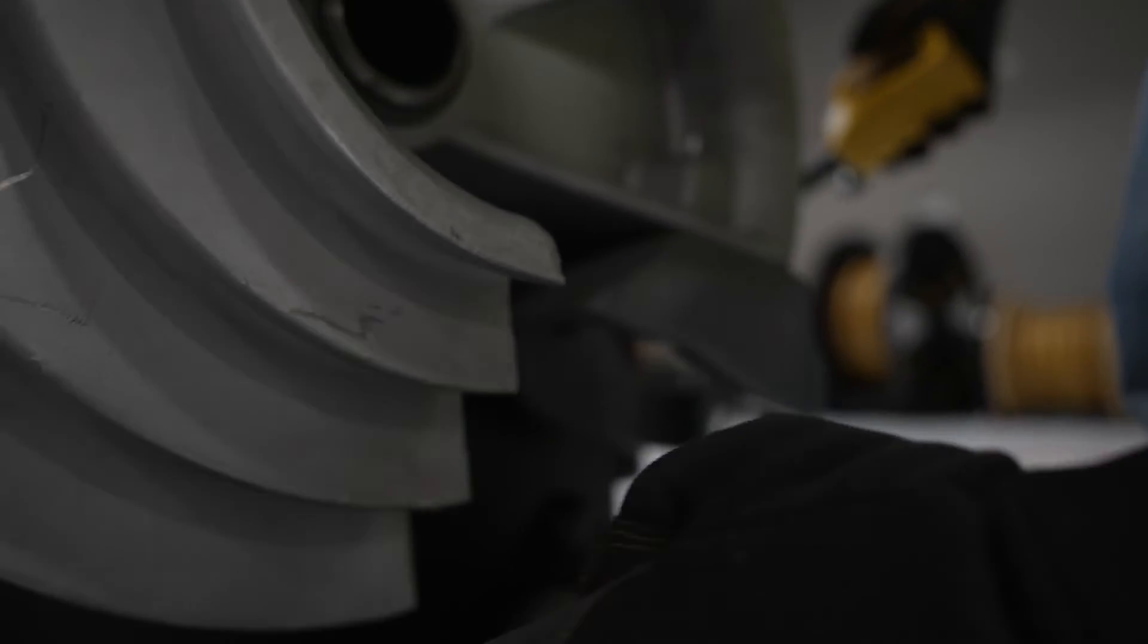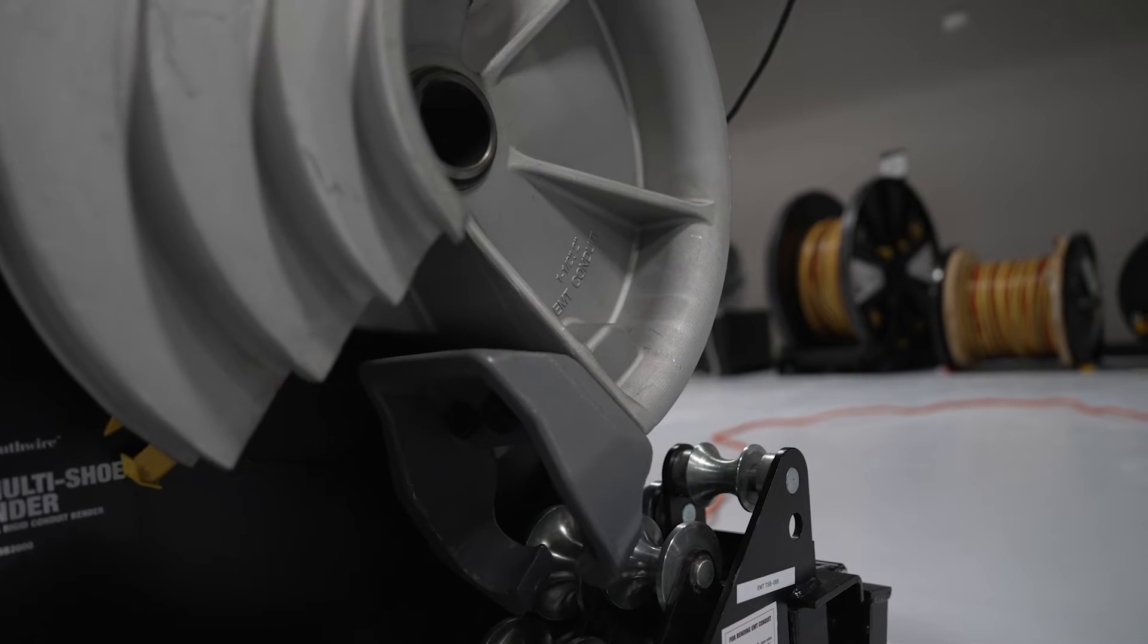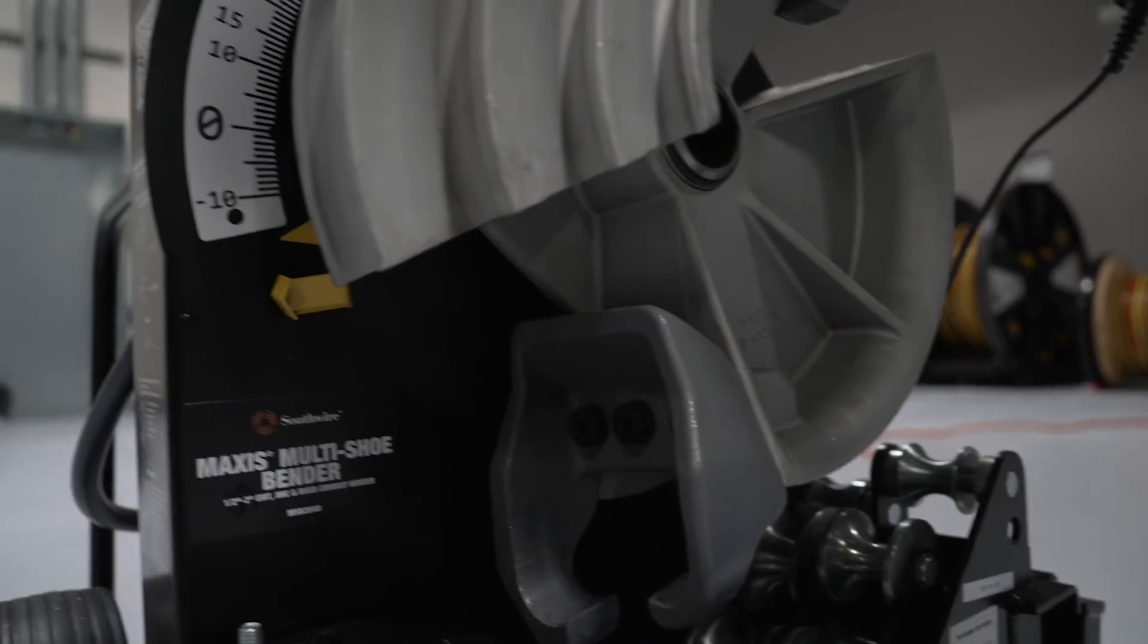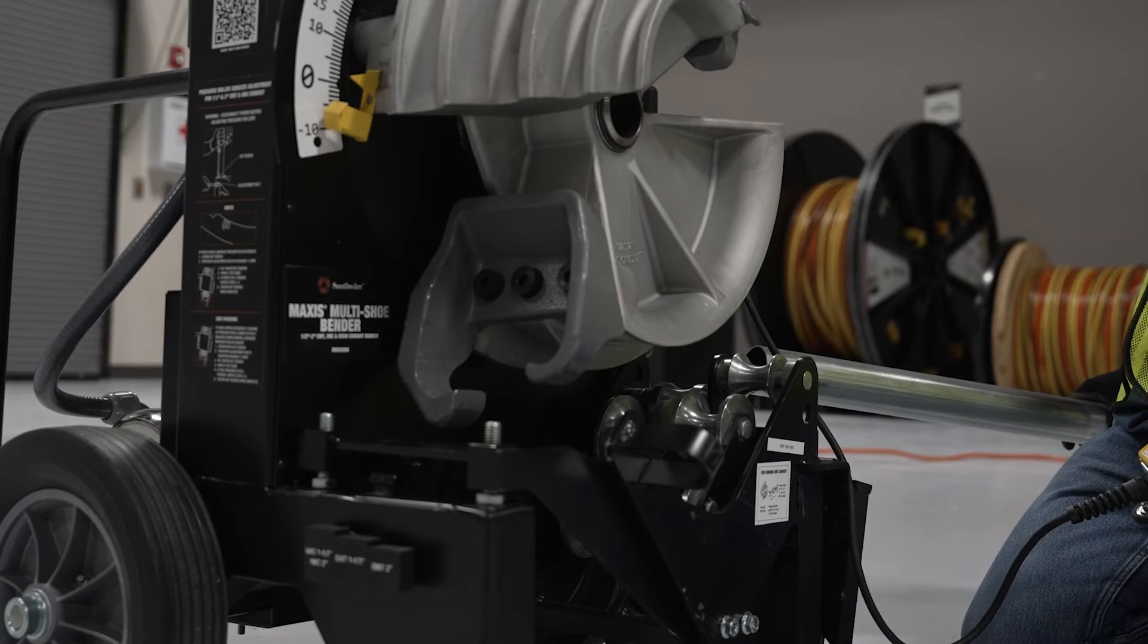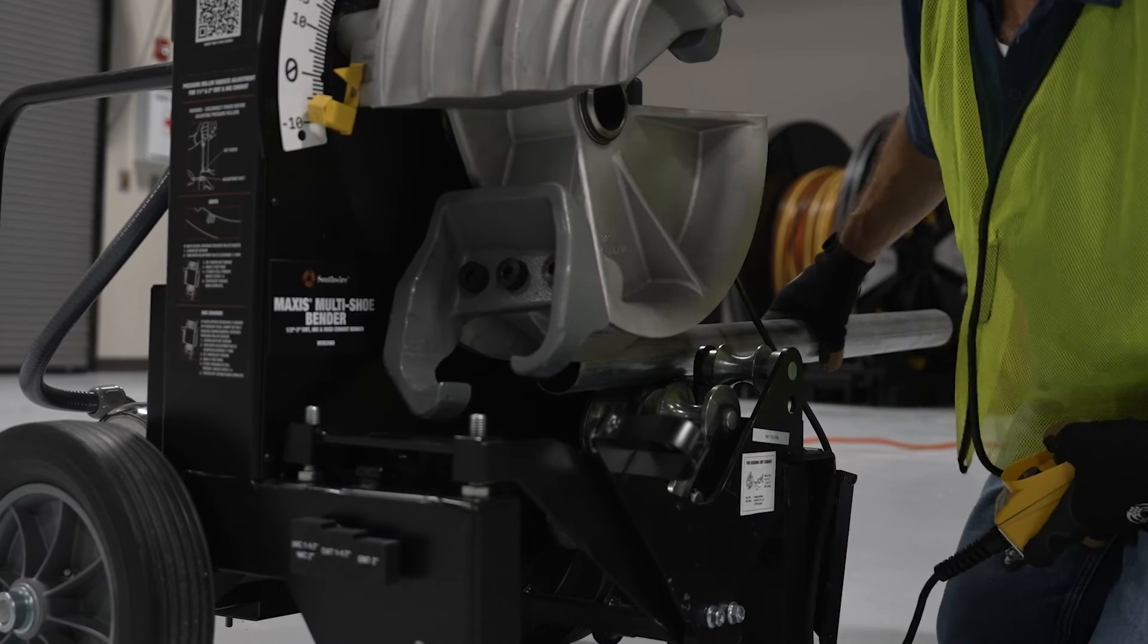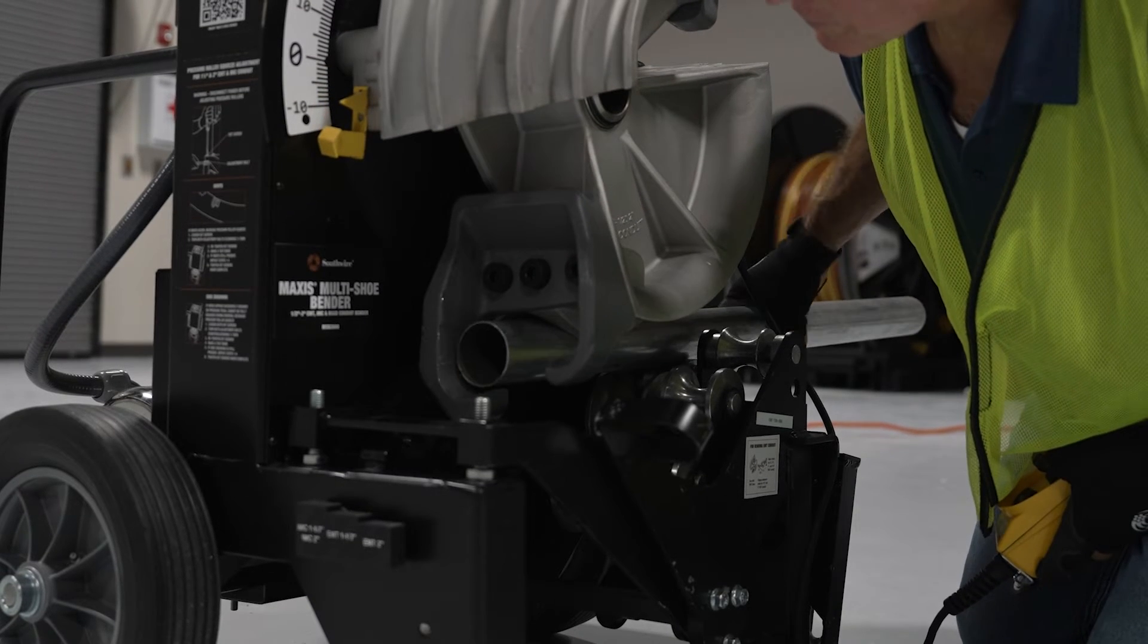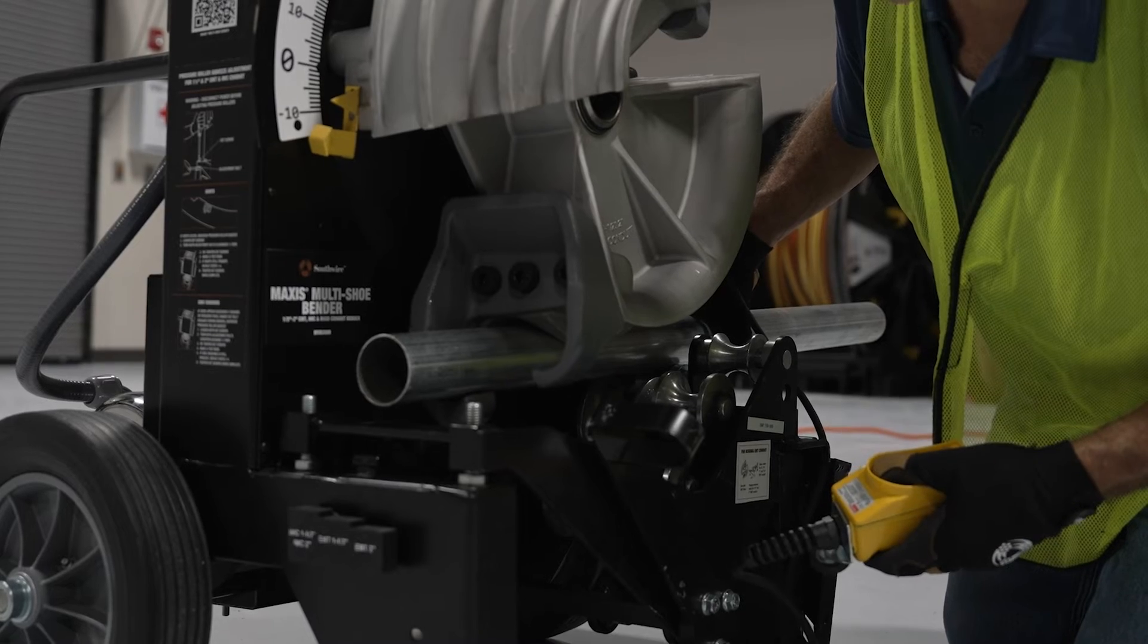Now using the pendant, press forward to rotate the shoe clockwise. Rotate the shoe until the inch and a half and two-inch half of the shoe is facing down and the arrow pointer is approximately five degrees before the zero degree starting point. Then, facing the front of the bender, load the conduit into the right side of the bender. Guide the conduit into the bender until it rests in the hook, and you may need to rotate the shoe a little bit so the conduit lies in the hook.